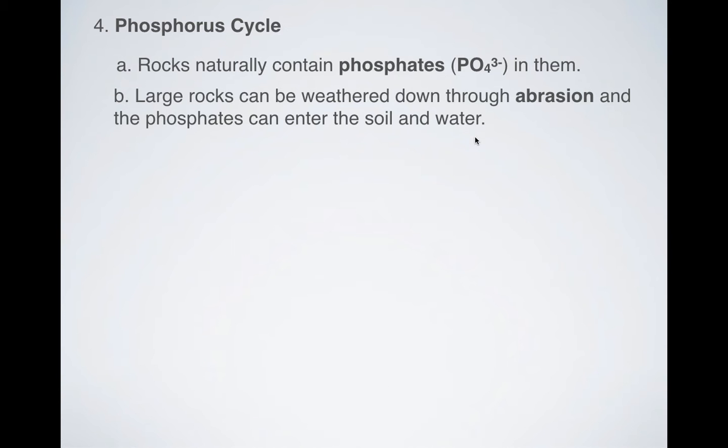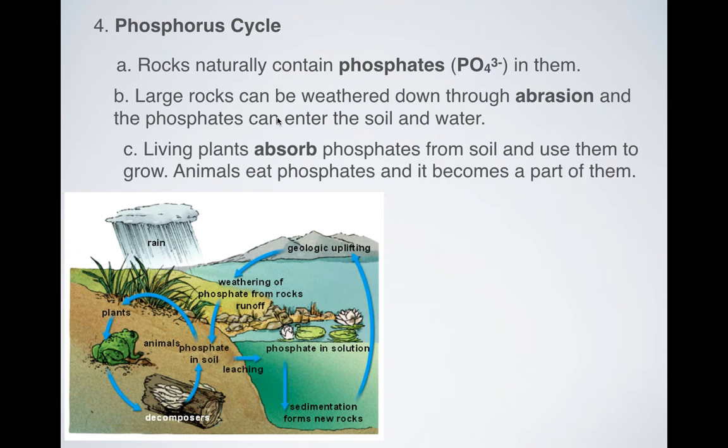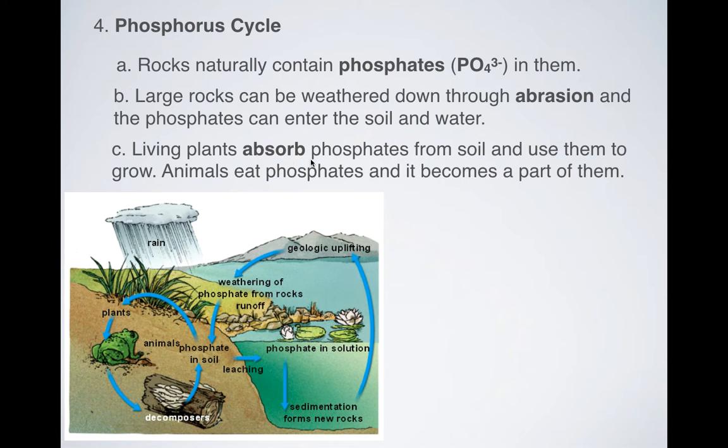Large rocks can be weathered down by abrasion and phosphates can enter the soil and water. Another kind of interesting thing about that is that living plants absorb phosphates from the soil and use them to grow. And then when we eat those plants or when we eat anything that has phosphate in it, it becomes a part of us and our cells.